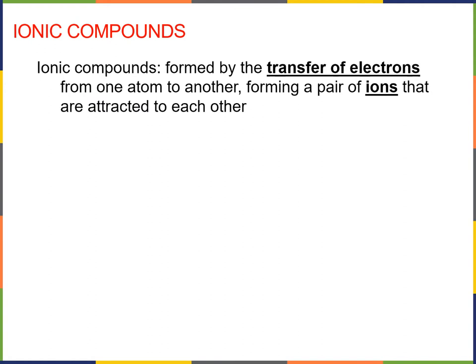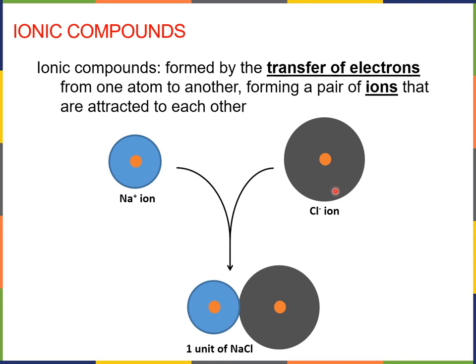So we learned in a previous lecture that ionic compounds are formed by the transfer of electrons from one atom to another, forming a pair of ions that are attracted to each other. And so the sodium ion and the chloride ion, one is positively charged, one is negatively charged, and they may come together and give us one unit of sodium chloride.